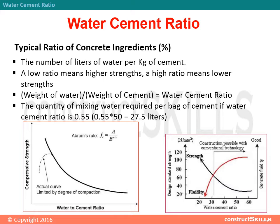Weight of water divided by weight of cement equals the water cement ratio. The quantity of mixing water required per bag of cement at a water cement ratio of 0.55 is 27.5 liters.